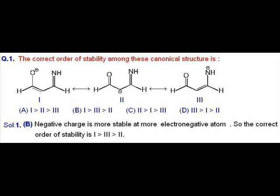Question 1: The stability of canonical structures is asked. The principle is that when negative charge is on a more electronegative atom, it is more stable. Canonical structure I is most stable, then III when negative charge is on nitrogen, and lastly II. The correct order is option B.